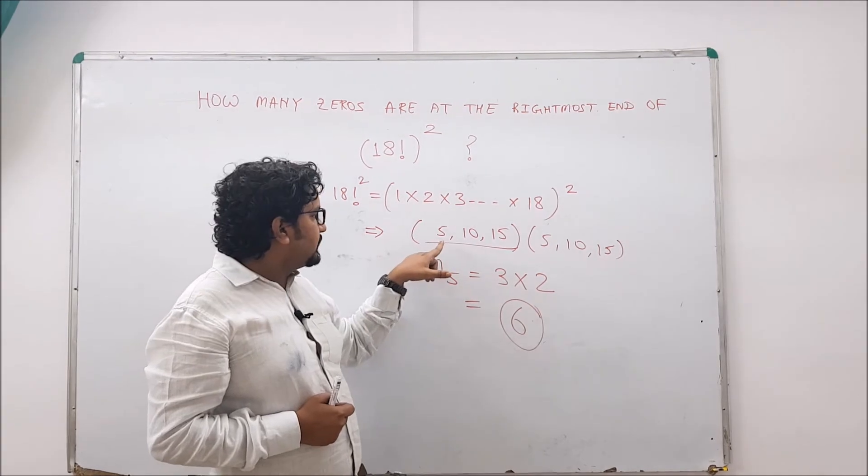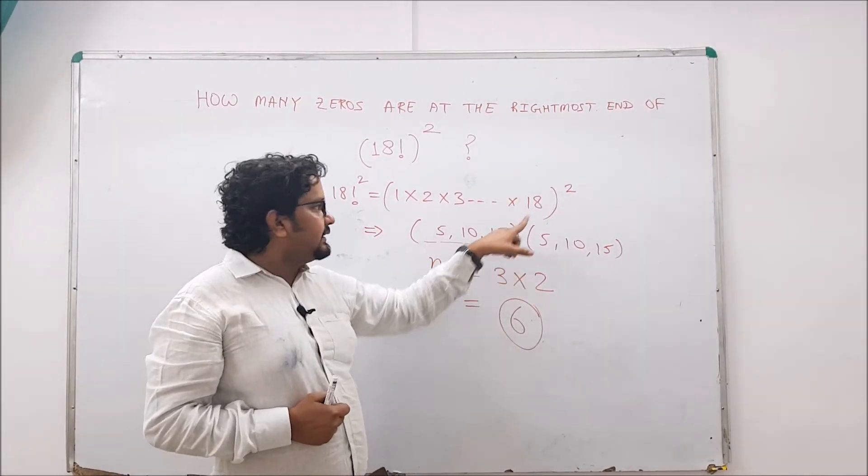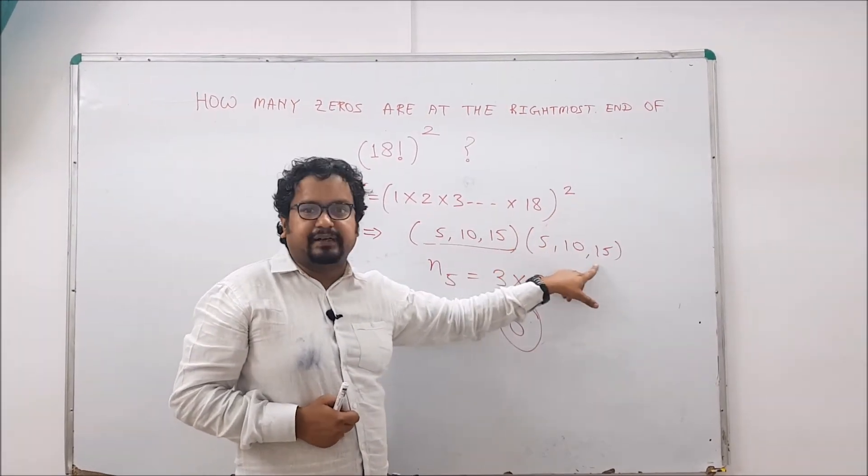So when do we get 5s? 5, 10, and 15. And since it's a square, again 5, 10, and 15.